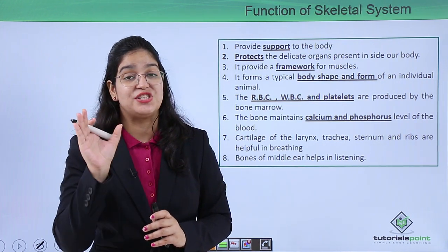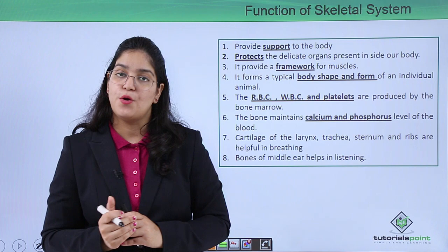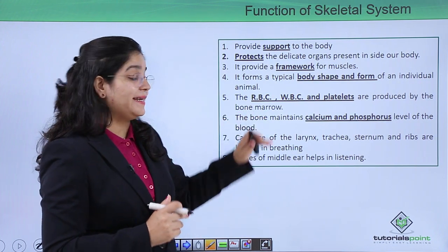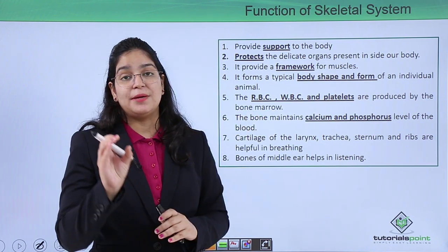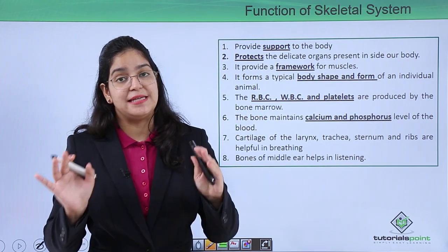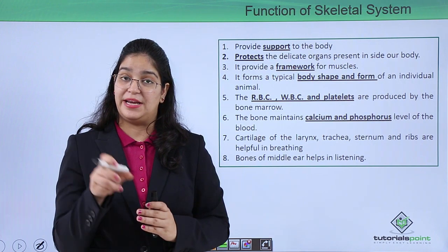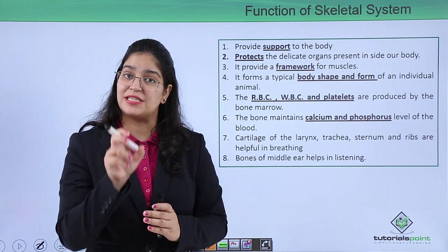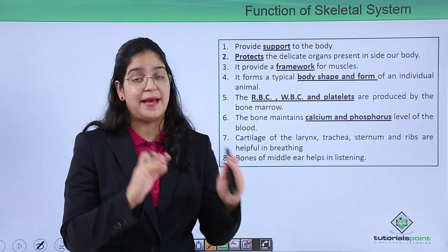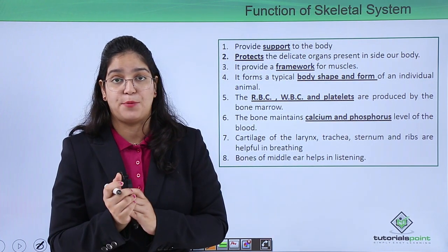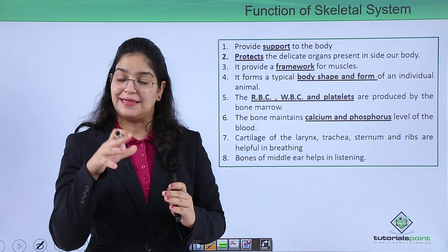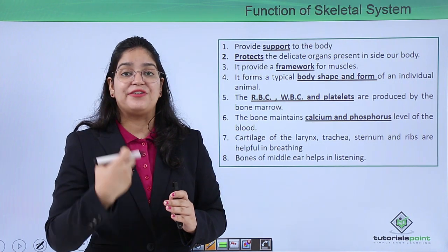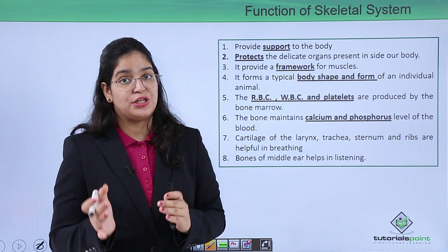Important blood cells — RBC, WBC, and platelets — are actually manufactured inside the bone marrow, which is a part of the bone. Bones also maintain the calcium and phosphorus levels in our body. Whenever there is a deficiency of calcium and phosphorus, the bones start to release calcium and phosphorus, though this is not good for the bones.